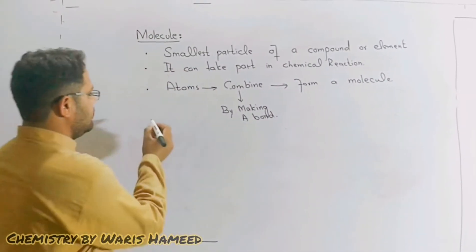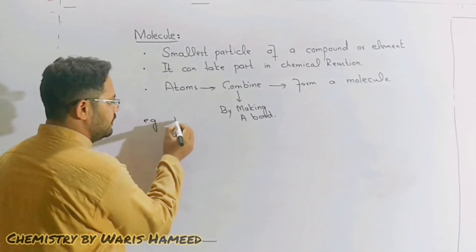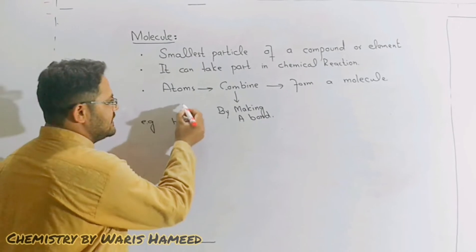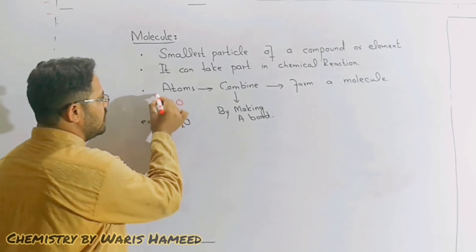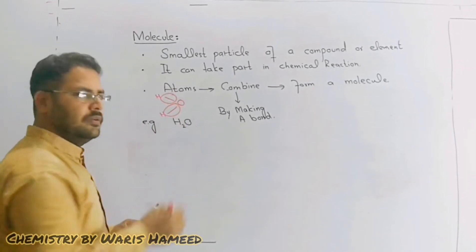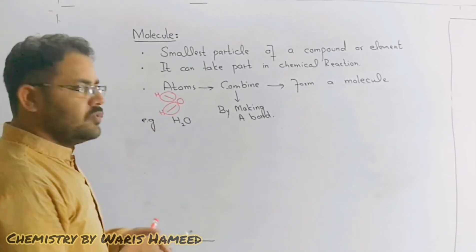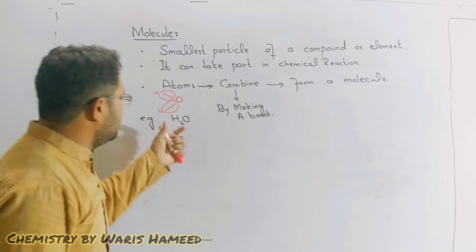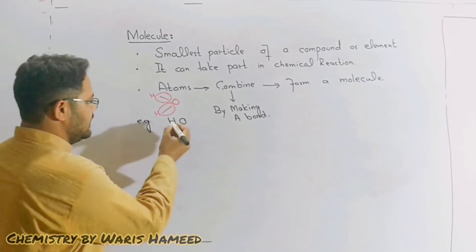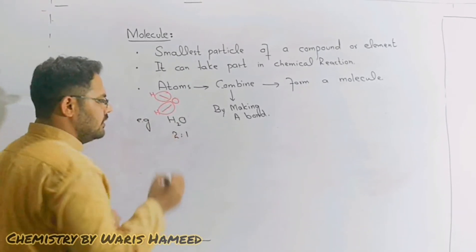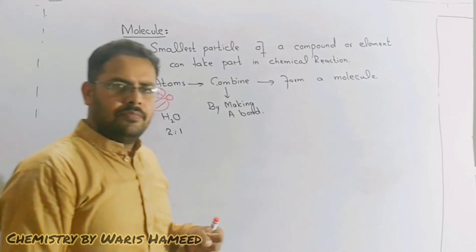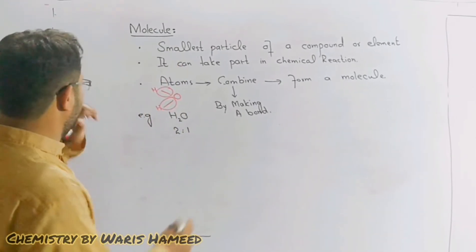For example, H2O. In a water molecule, one oxygen is making two bonds with two hydrogen atoms. So it forms water. We can say that in a molecule there is a proper ratio of atoms. In water, the ratio is two to one — there are two hydrogen atoms and one oxygen atom.